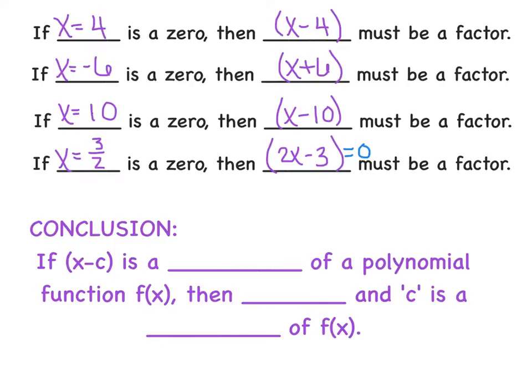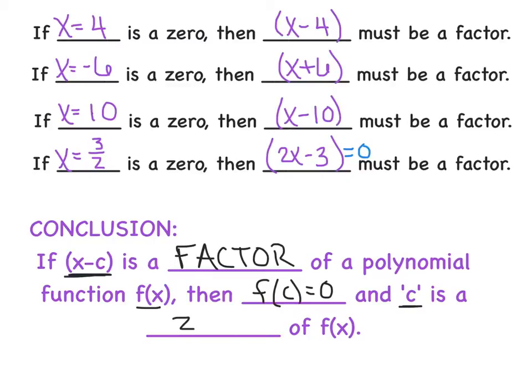Here's the conclusion tying it all together: if (x minus c) is a factor of some polynomial f(x), then f(c) equals 0, and we say c is a zero of f(x).